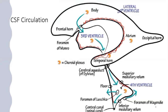CSF is a clear fluid that surrounds the brain and spinal cord. It cushions and protects the brain and spinal cord from injuries, and provides nutrition and removes waste material from the brain. The ventricular system has four ventricles: two lateral ventricles, one third ventricle, and one fourth ventricle — they are CSF-filled cavities in the brain. The lateral ventricle has a body, atrium, and three horns: frontal horn, occipital horn, and temporal horn. The foramen of Munro connects the lateral ventricle to the third ventricle.